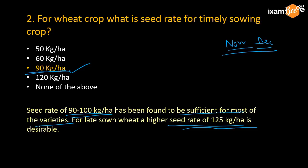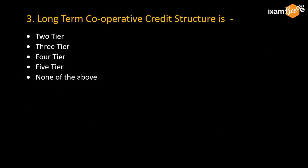That is the best time because wheat is a Rabi crop — those preparing for NABARD will know that wheat is a Rabi crop and paddy is a Kharif crop. When there is late sowing, you have to increase the seed rate.